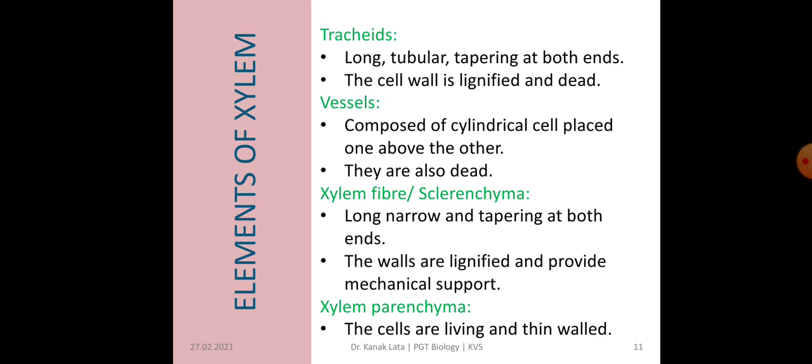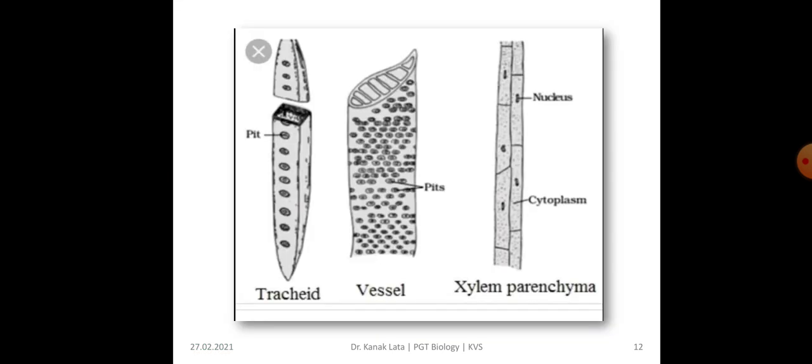The last element is xylem parenchyma. Xylem parenchyma cells are living and have thin walls. Here you can observe the tracheids, vessel, and xylem parenchyma.